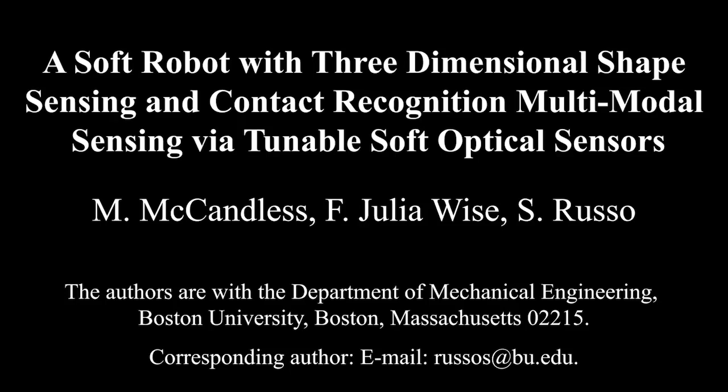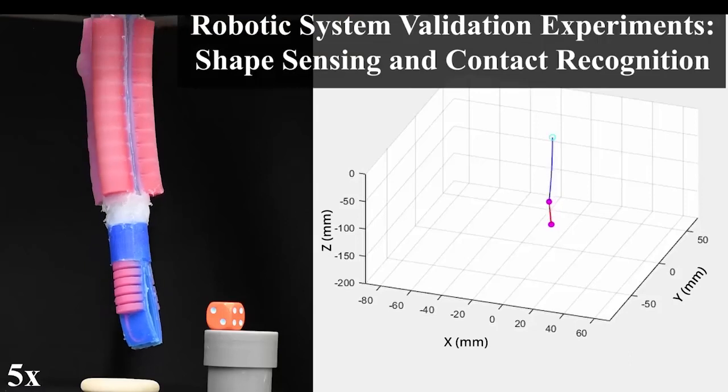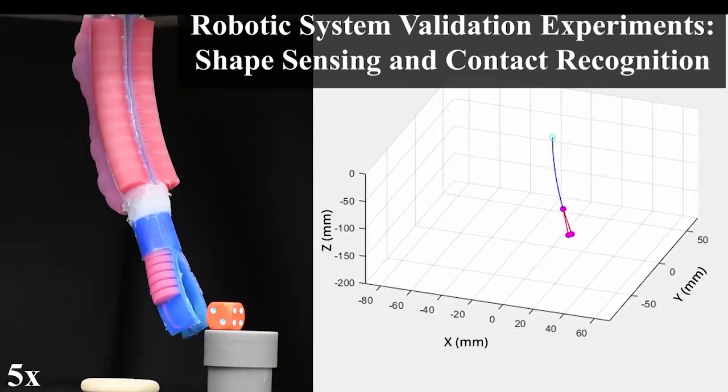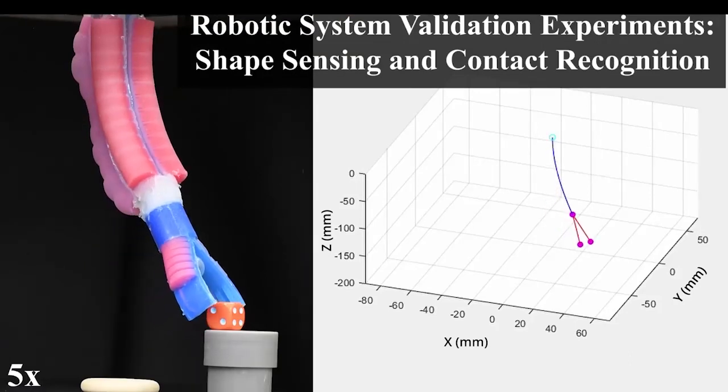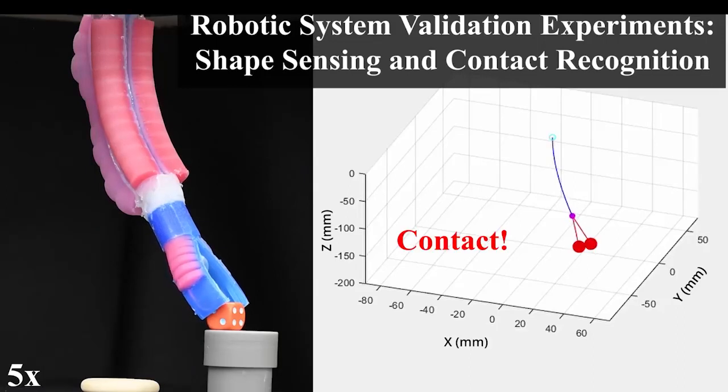A soft robot with three-dimensional shape sensing and contact recognition multimodal sensing via tunable soft optical sensors. This work presents a fully soft robot combining a soft optical sensorized multimodal gripper for tip tracking and contact recognition.